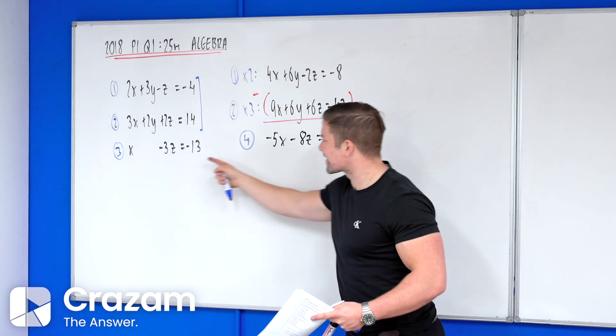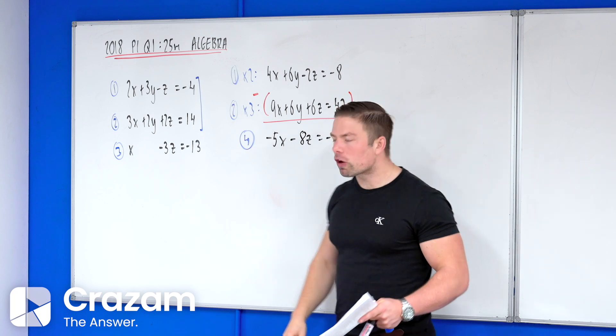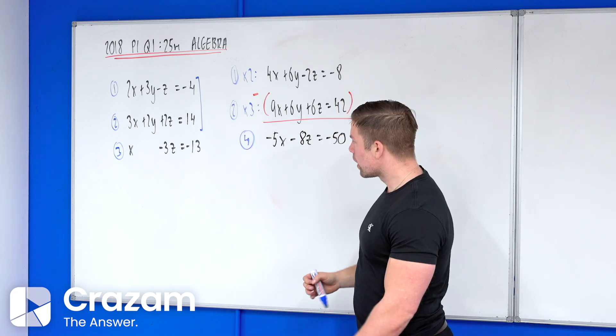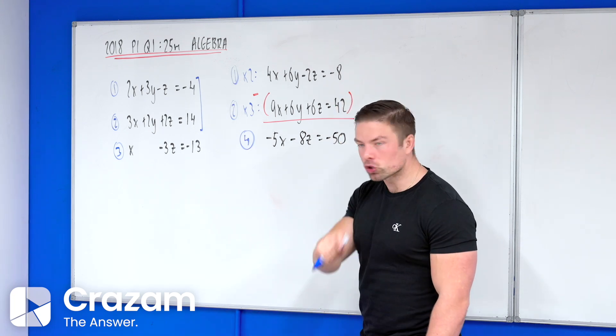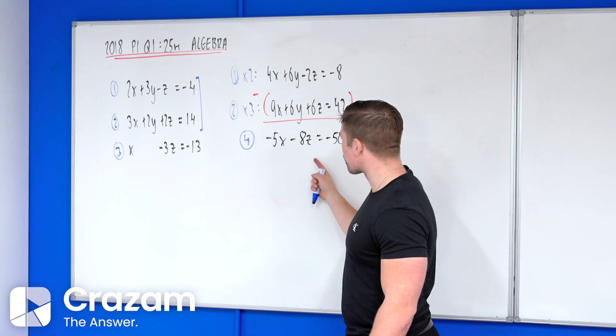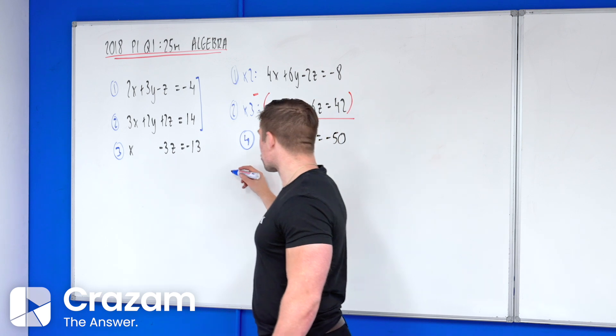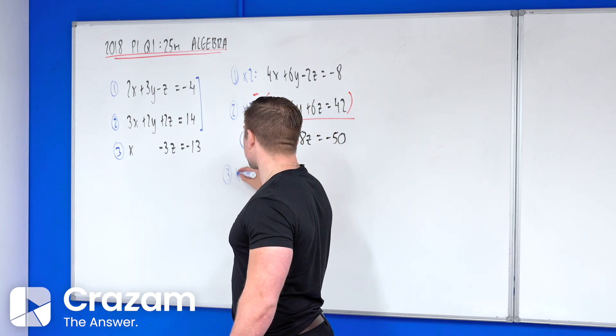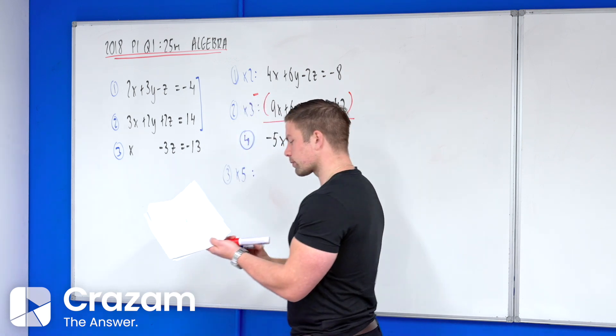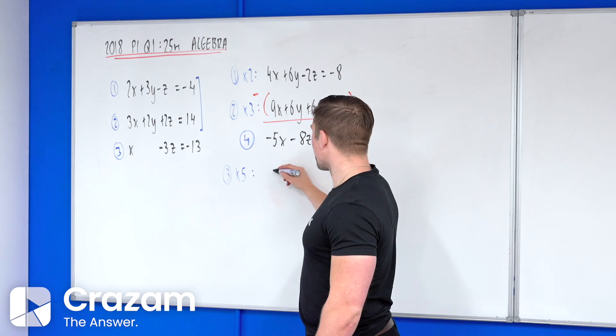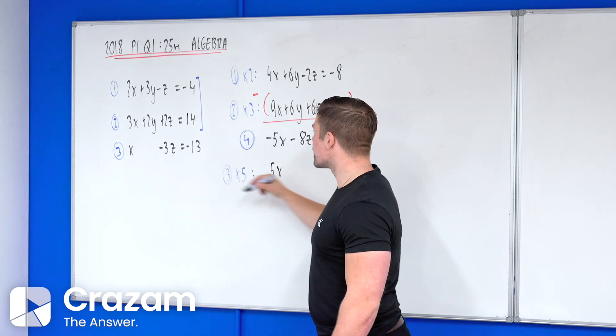We have two equations with two unknowns in the same letter and now we can solve this exactly like junior cert. We do have to set it up. It doesn't make a difference if you get rid of the z's or the x's. I'm going to get rid of the x's. If I take equation three and multiply by five, that gives me 5x minus 15z